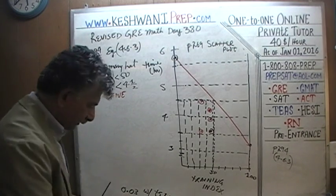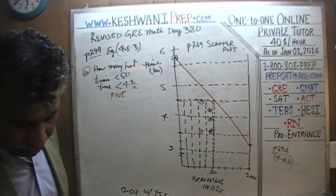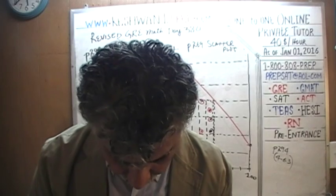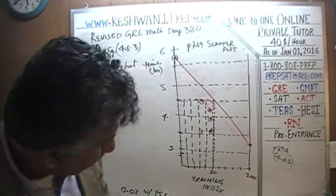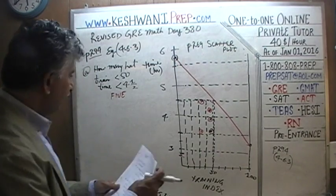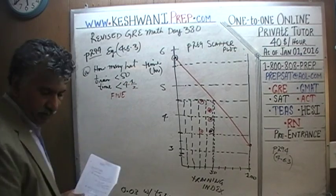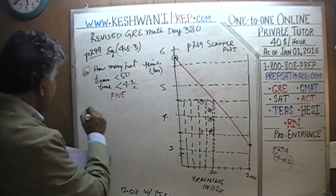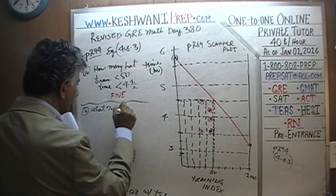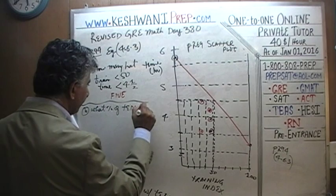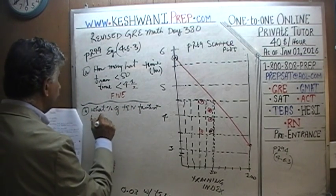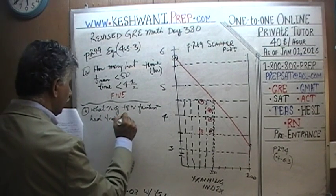The only reason anyone would get this wrong is sheer carelessness — there is no math in it, just a matter of reading your chart carefully. Now let's do part B: what percent of the 10 fastest bicyclists had a training index of less than 90?